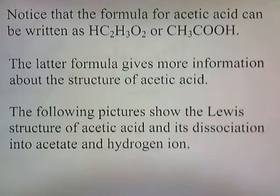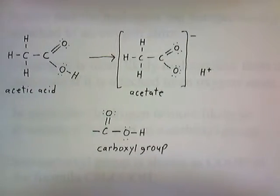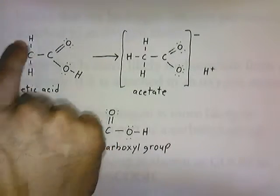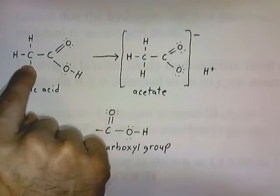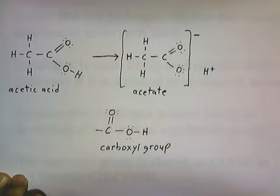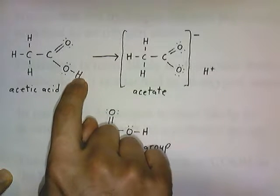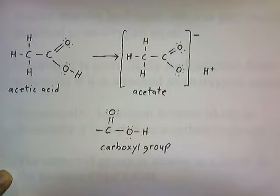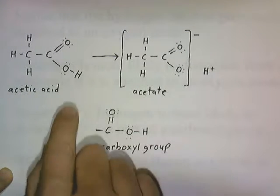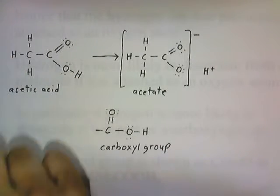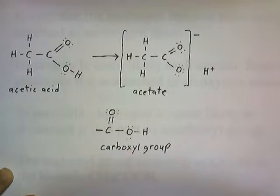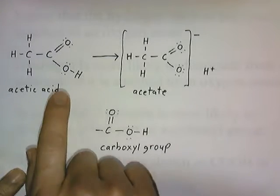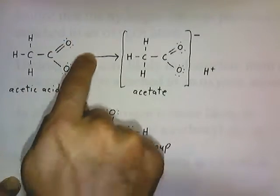The latter formula gives more information about the structure of acetic acid. The following pictures show the Lewis structure of acetic acid and its dissociation into acetate and hydrogen ion. Here is acetic acid: CH3 is carbon with three hydrogens attached. That's why we write it as CH3COOH. When this dissociates, the hydrogen attached to the oxygen gets removed, leaving behind acetate with a negative one charge. The hydrogen is more likely to dissociate if it's attached to an oxygen atom.